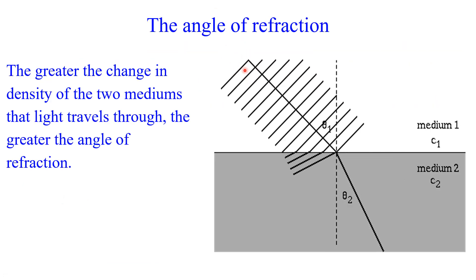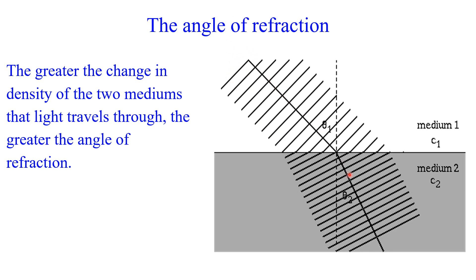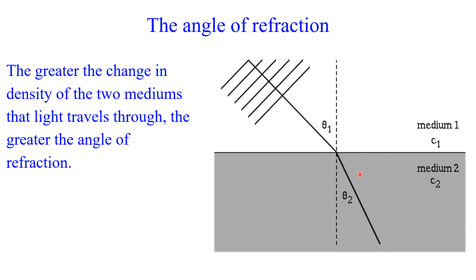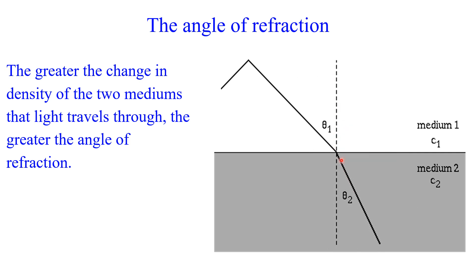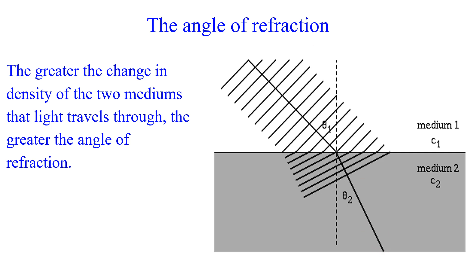This GIF highlights this nicely. We've got light going through medium one which has a lower density in terms of the arrangement of particles, then we go into medium two which has a denser arrangement of particles. This slows down the light and it bends towards that imaginary line that we call the normal line.